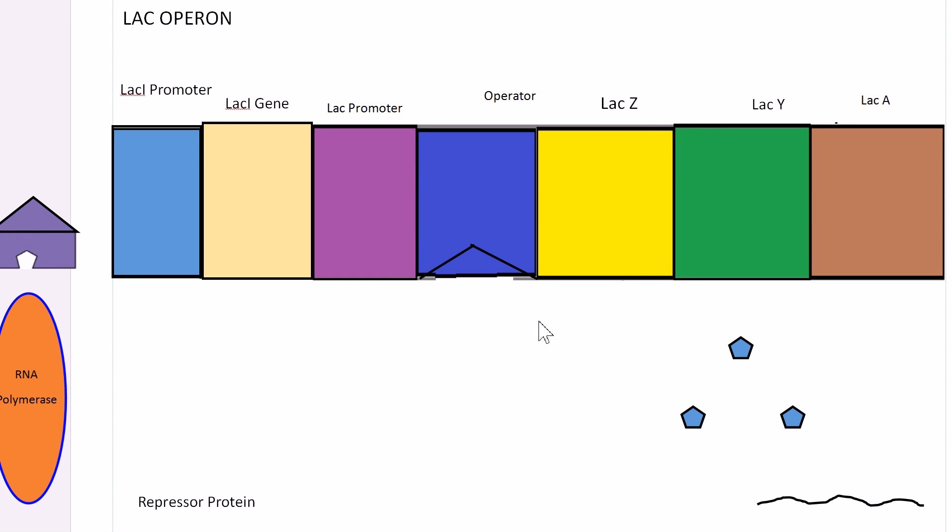The lac operon genes lac Z, lac Y, and lac A deal with breaking down lactose. Upstream from the operon, which is the area from the promoter, the operator, and the genes following, is the lac I promoter and the lac I gene.